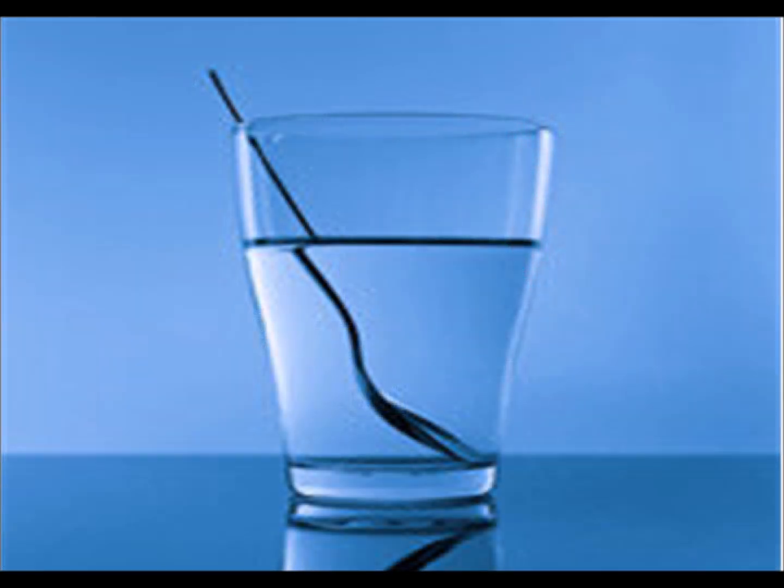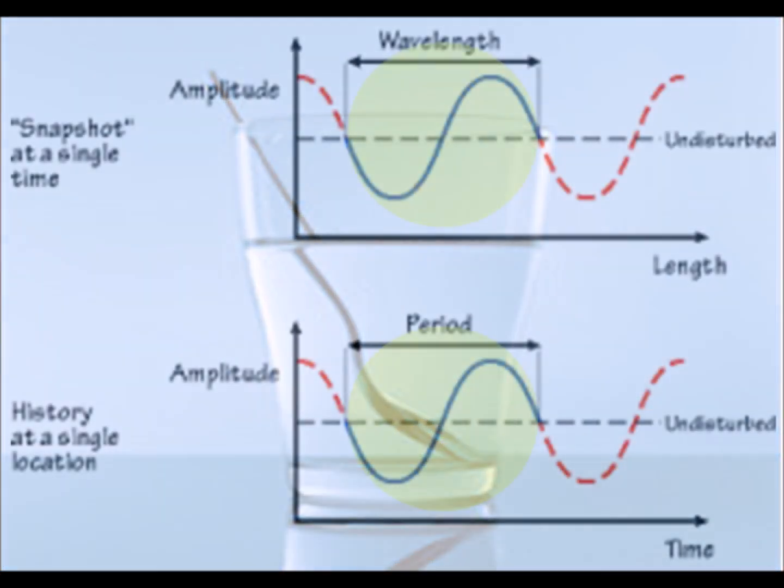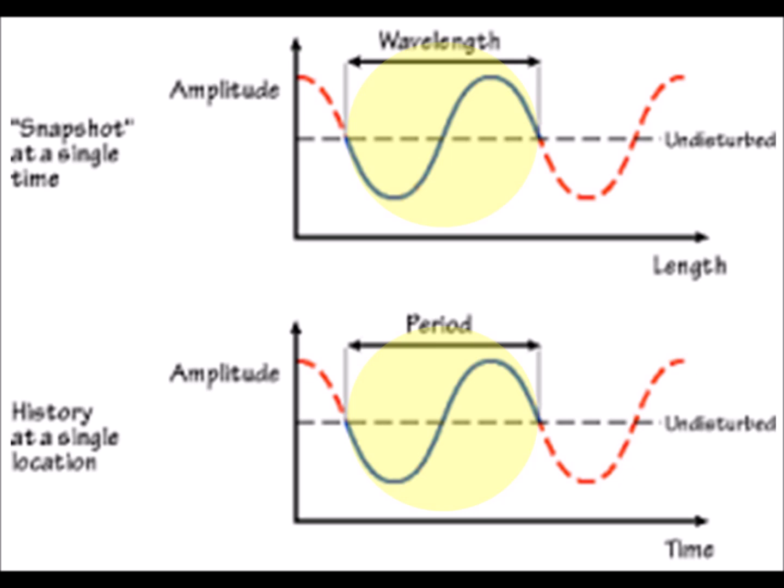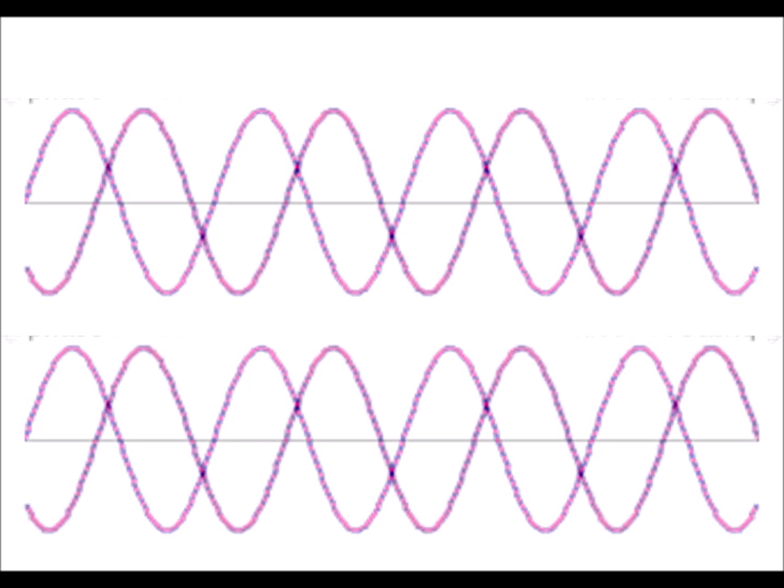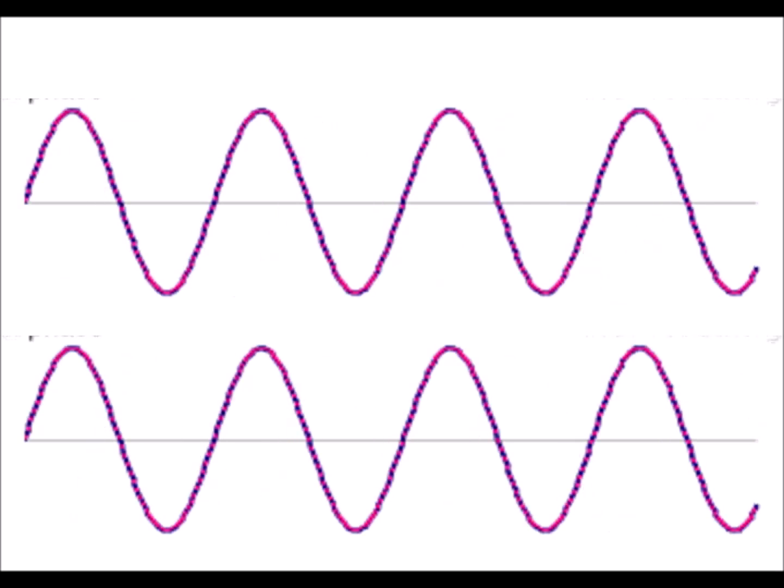But what the scientists found by using two light beams that have the same frequency, meaning the same number of waves per second, with the waves in phase, meaning the peaks and troughs are occurring at the same time.